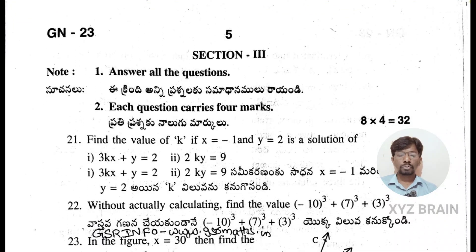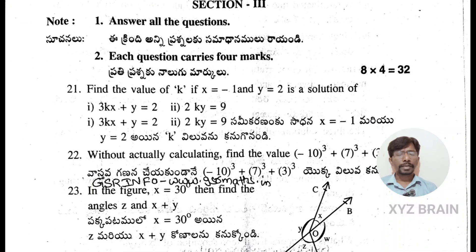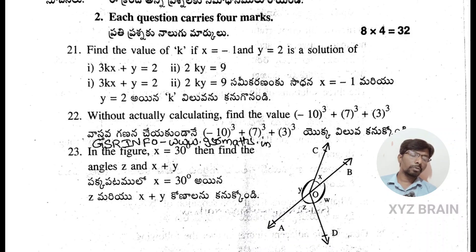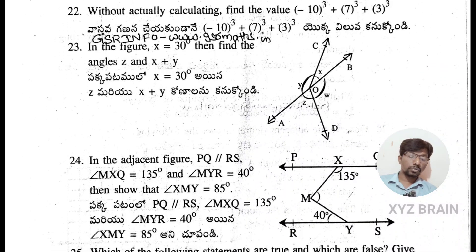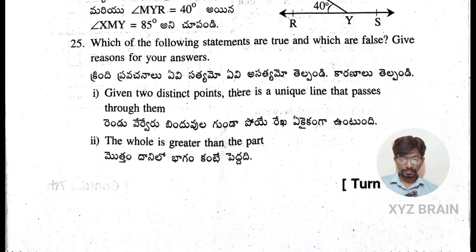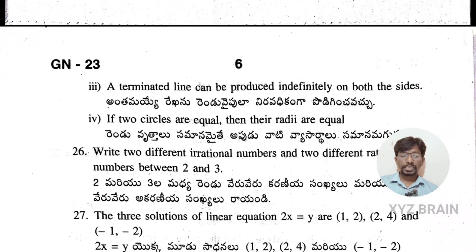Section 3 carries 4 marks each. Question 20: find the value of k if x = -1 and y = -2 is a solution of the equation. Question 21: without actually calculating, find the value of (-10)³ + 7³ + 3³. Question 22: in the figure, x = 30°. Question 24: refer to the adjacent figure. Question 25: which of the following statements are true and which are false — give reasons for your answers.